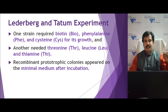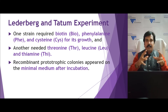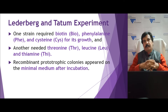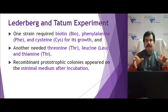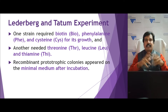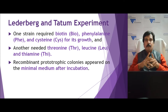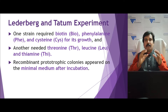They placed both strains in direct contact inside a test tube and incubated them. After cultivating in a minimal media — media that does not contain any of these amino acids: biotin, phenylalanine, cysteine, threonine, leucine, and thiamine — both strains would eventually die. Only the strain in which genetic transfer happened can grow.